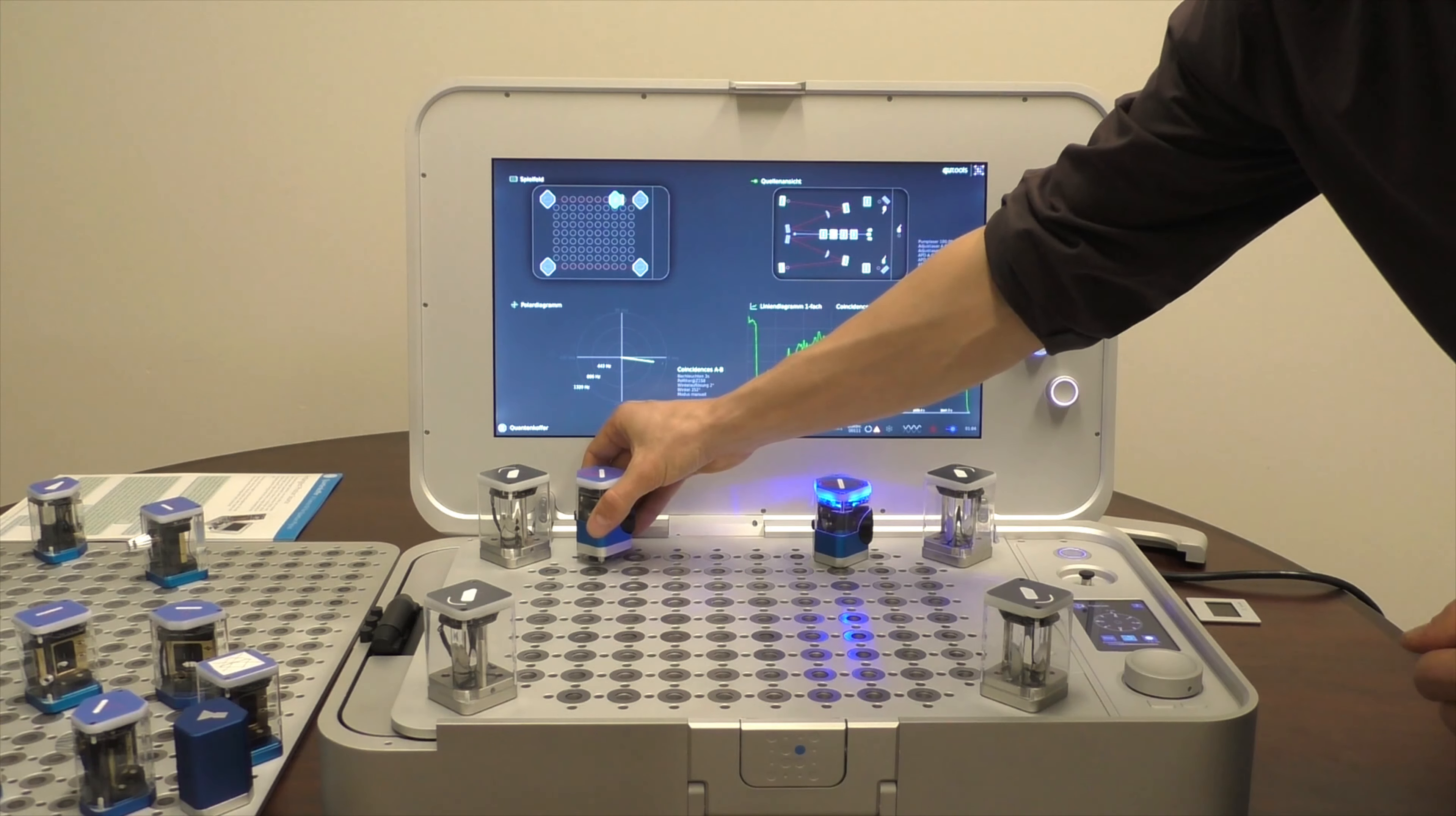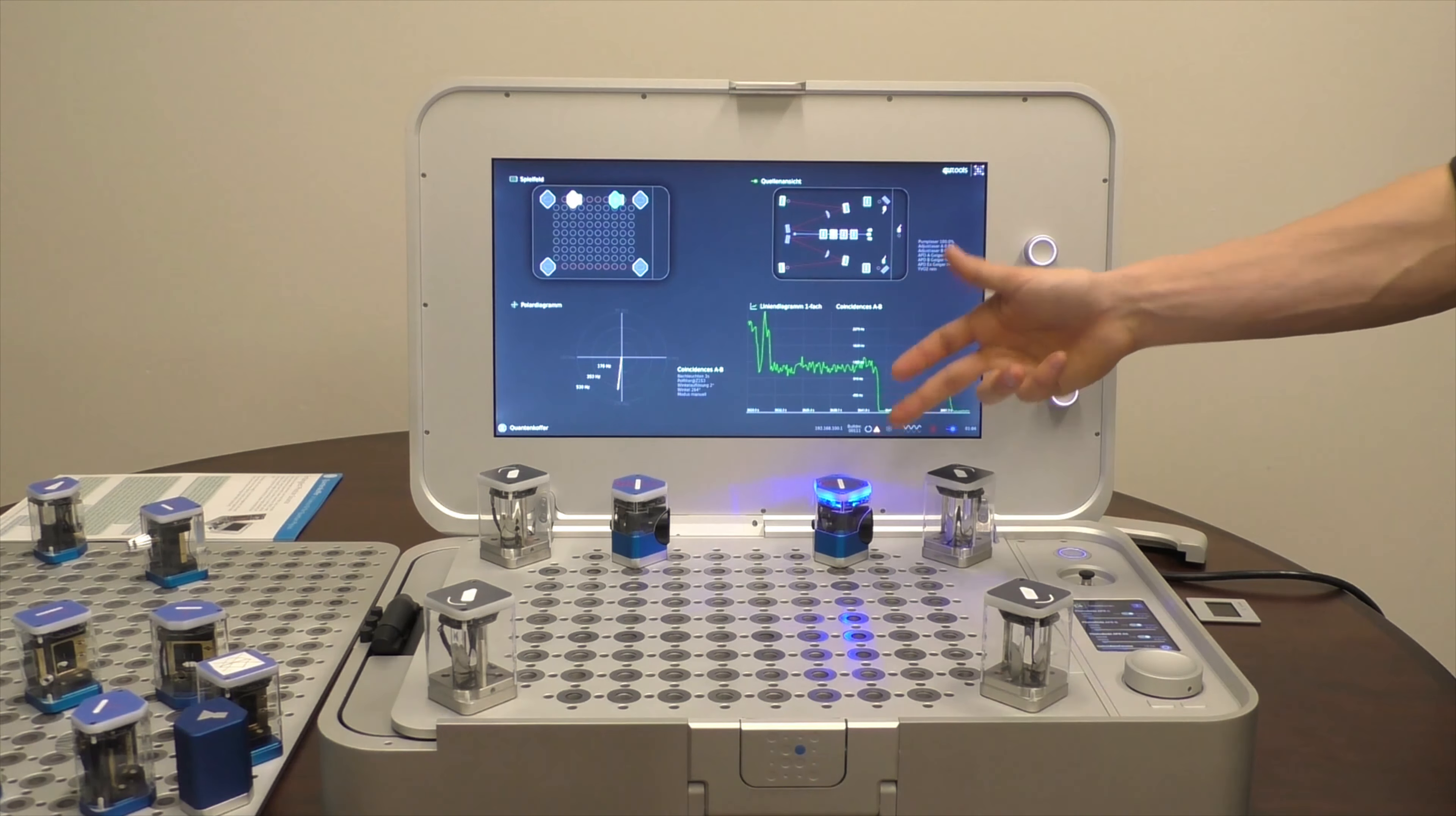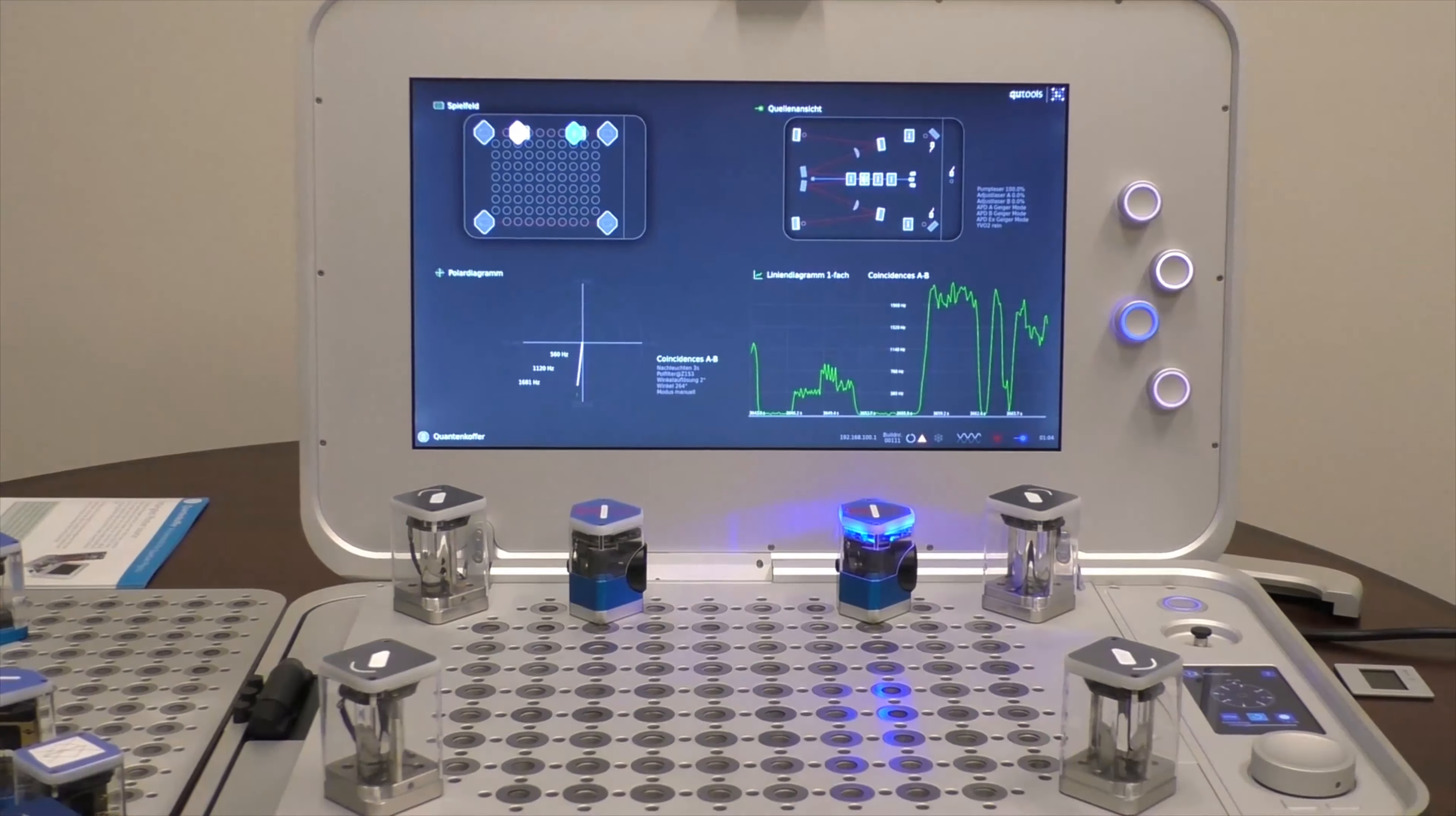First let me show you that if we put two polarizers in one beam path, we can use the first polarizer to set a specific polarization that we then can measure with the second one. So to measure polarization you would need to measure at different angles. For example, you can turn this by hand and you will see that the count rate will change depending on the angle I set here.